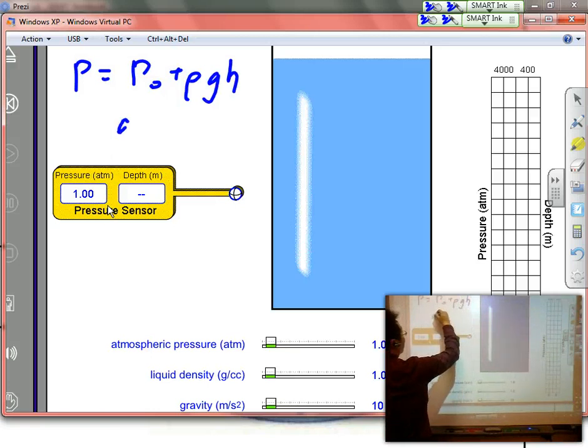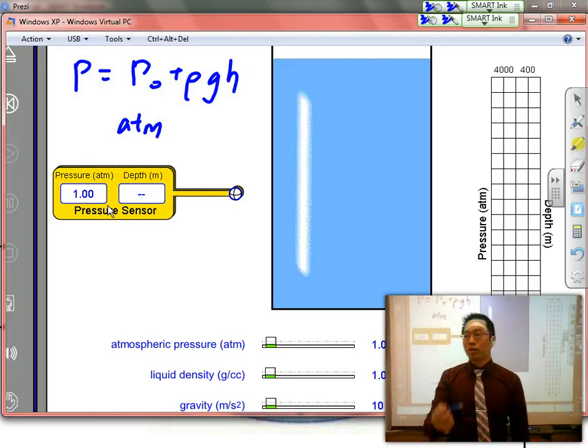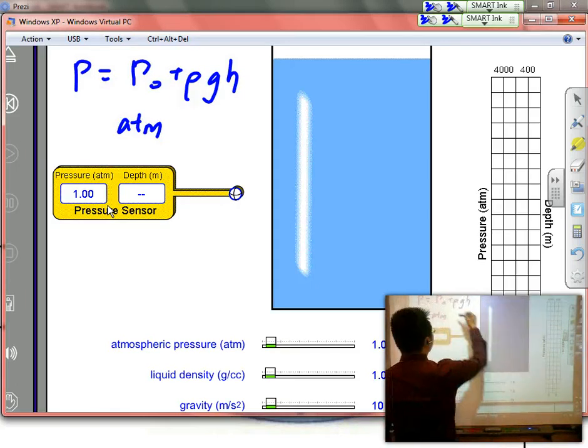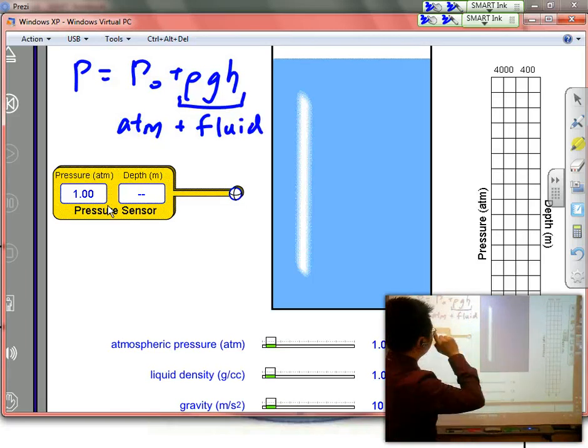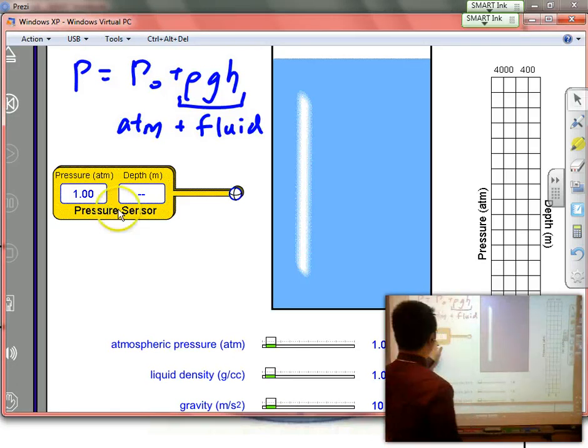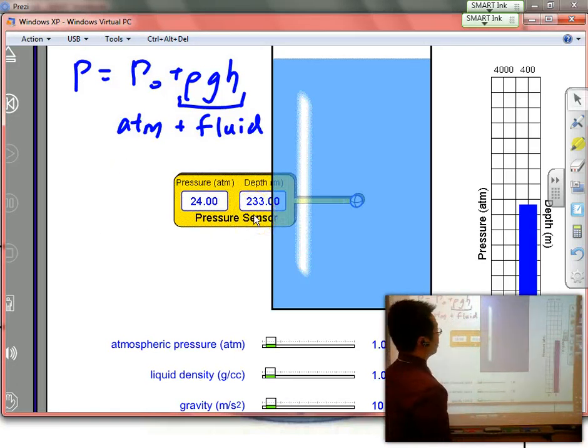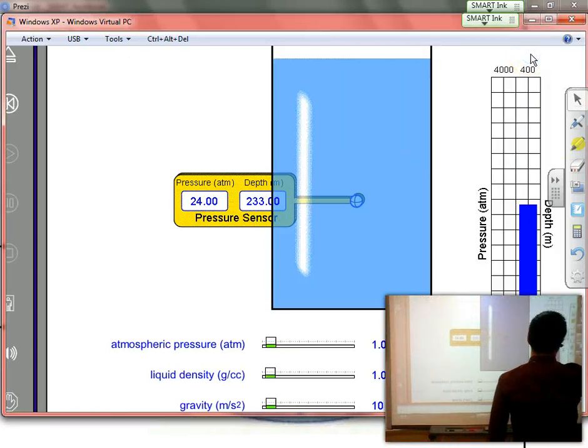It's all squeezing down onto that sensor. So the formula that you guys should be writing down for pressure is P equals P0 plus rho GH. P0 stands for atmospheric pressure, which is 1 ATM or 100,000 newtons per meter squared. And rho GH is the fluid pressure. I'm going to rewrite this again later. But all together, you create a total pressure, which as we can see in this example over here.